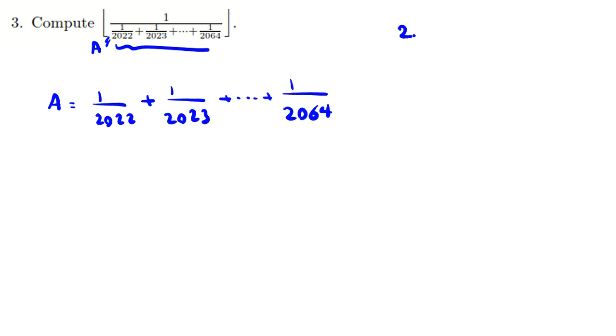We want to see how many fractions we have. The last one minus first one plus one. So if we subtract it will be 42, minus 0, okay. So it will be 2064 minus 2022 plus 1 equals 43.